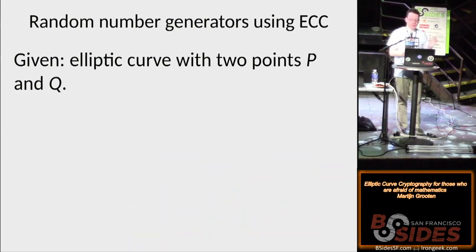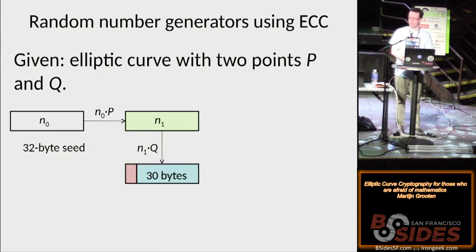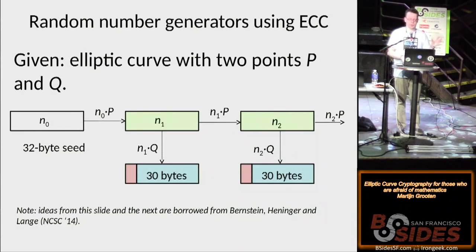But we can modify this algorithm a bit by using an extra point. So now we have an elliptic curve with two points, p and q. And we take n0, it's 32 bytes of proper randomness. And again we take n0 times p to get n1. But now we don't just take n1, we take n1 times q. We get another 32 byte point slash number, we throw away the first two bytes, and we get another 30 bytes, and that's your random output. And remember that the discrete logarithm problem basically means that you can't go from n1 times q to n1, so you can't crack this. And I should say, credit where credit's due, the idea of this slide and the next one to present it this way is based on a talk I once saw by Dan Bernstein, Nadia Henninger, and Tanya Lange.